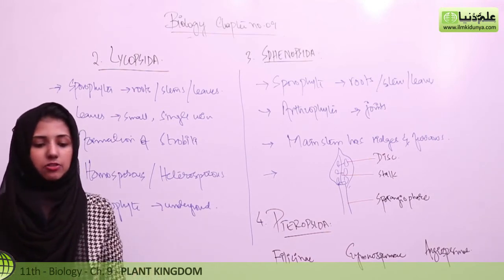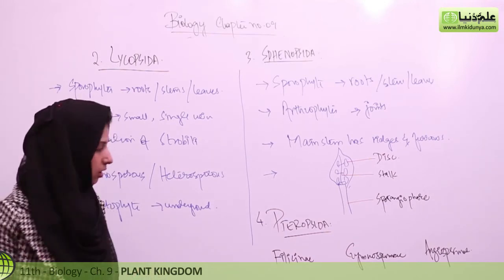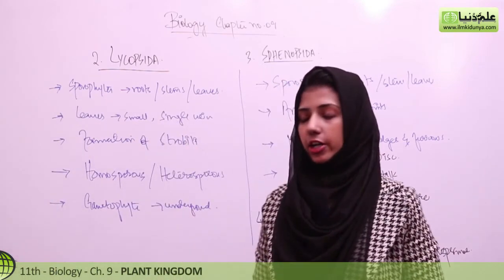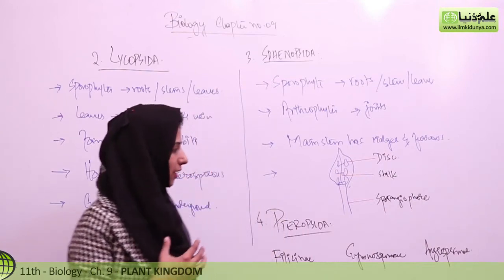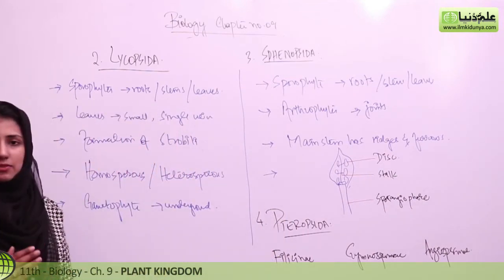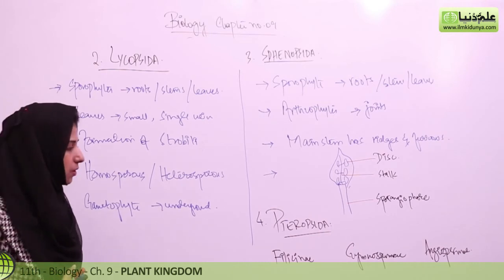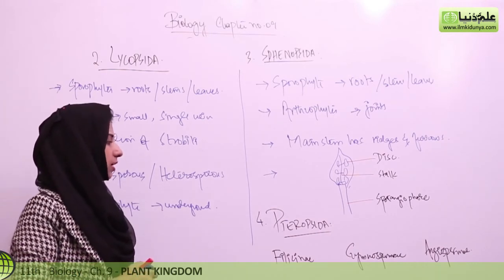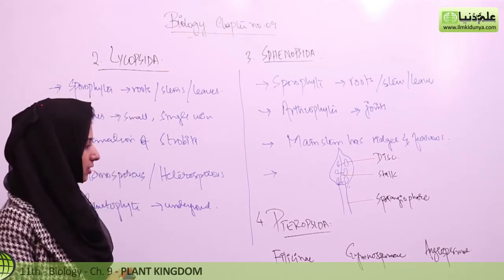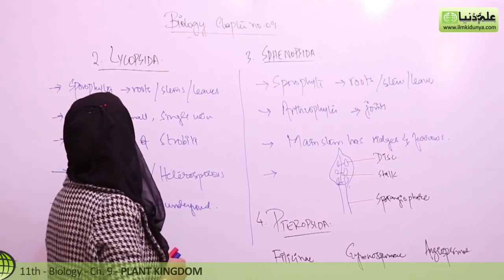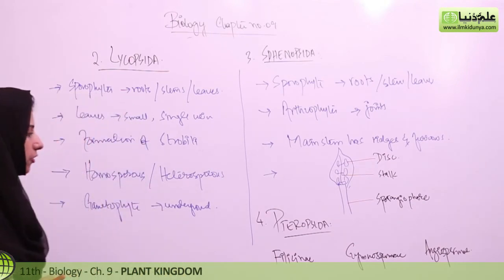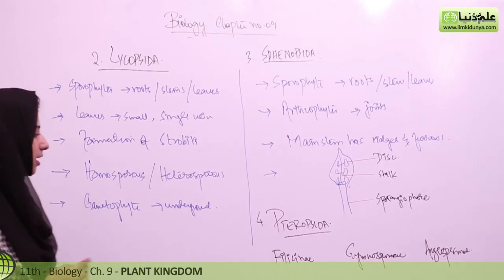The division Tracheophyta is further divided into three classes: class Filicini, Gymnospermia, and Angiospermia. These are the three plant groups well adapted to land. Gymnospermia and Angiospermia are also available. We will be discussing the details in the next link.